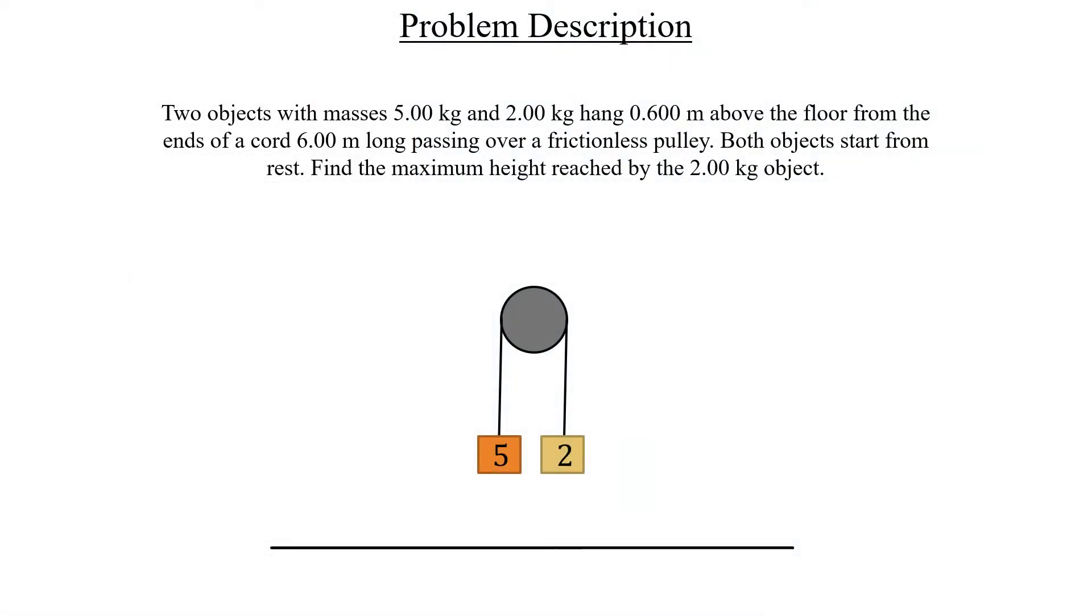We have a very simple problem description, pretty short. There's just two objects with masses 5 kilograms and 2 kilograms hanging 0.6 meters above the floor from two ends of a cord. The cord is 6 meters long and it passes over this frictionless pulley, so we don't have to worry about any kind of weird stuff there. We're told that both objects start from rest, and our job is to find the maximum height reached by this 2 kilogram object. To give you a bit of visualization and some clarity before we start with free-body diagrams, let's all agree on a reference.